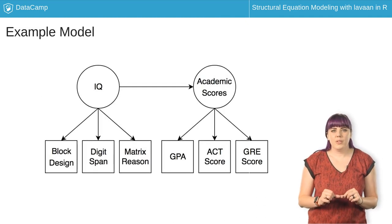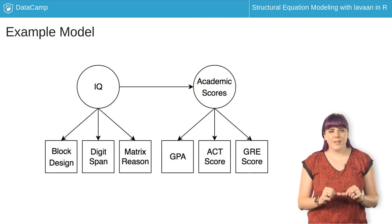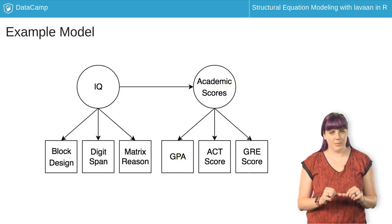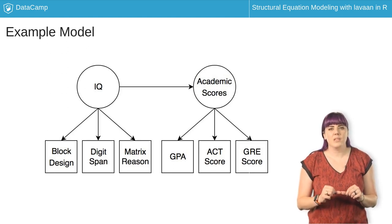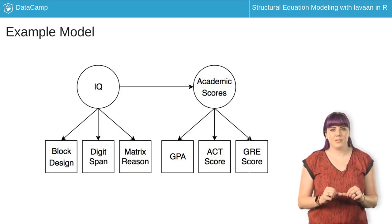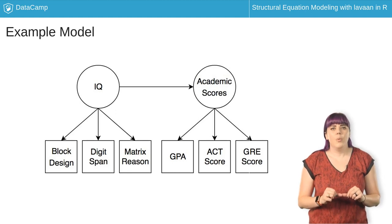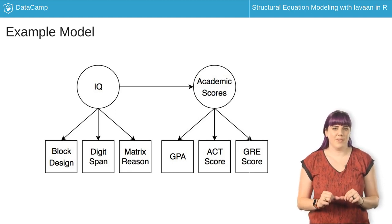In this example, we will use block design, digit span, and matrix reasoning subtests as manifest variables to indirectly measure the latent variable intelligence. These three manifest variables are used to measure abstract correct reasoning, attention, and visual perception, which are believed to be core components of IQ.